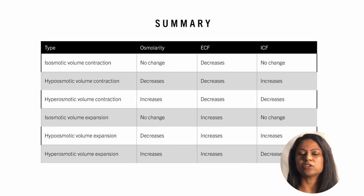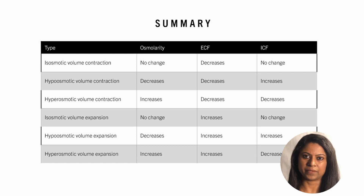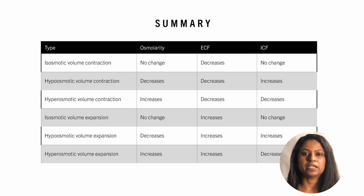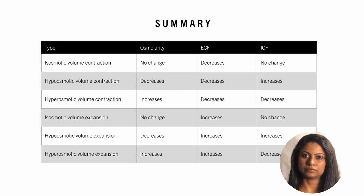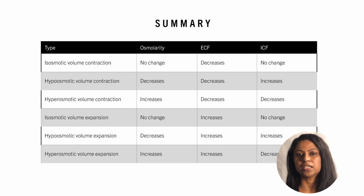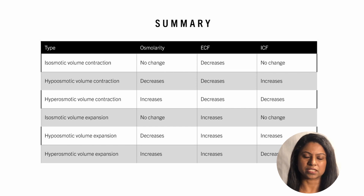In isoosmotic volume expansion, osmolarity stays the same; ECF volume will increase while ICF volume stays the same. In hypoosmotic volume expansion, osmolarity is going to decrease while ECF and ICF volume will both increase. In hyperosmotic volume expansion, osmolarity is going to increase; ECF volume is going to increase while ICF volume will decrease.